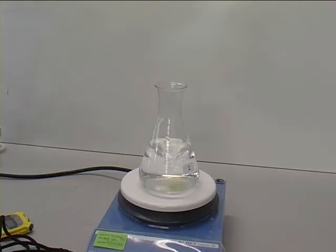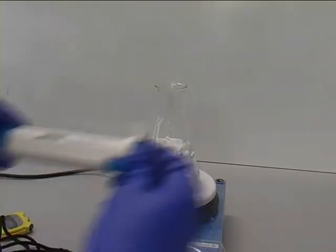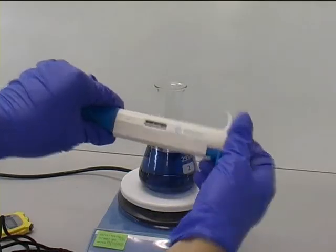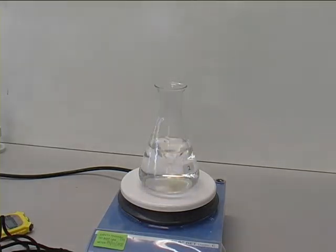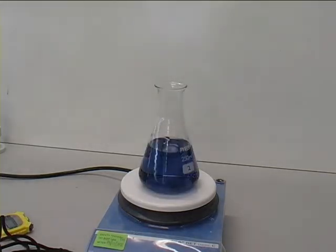When the blue color reappears, the time is recorded and 1 milliliter of thiosulfate is added to the solution. Further time recordings when the blue reappears and additions of 1 milliliter aliquots are performed until 8 to 12 readings have been obtained.